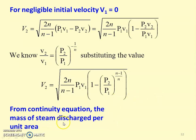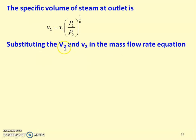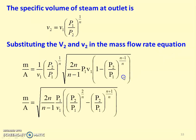From the continuity equation, the mass of steam discharged per unit area is M/A equals capital V2 divided by small v2, where capital V2 is the velocity and small v2 is the specific volume. The velocity is from the earlier equation, and the specific volume is calculated from the polytropic equation: v2 equals v1 times (P1/P2) to the power 1/n. Substituting capital V2 and small v2 into the mass flow equation gives: M/A equals (1/v1) times (P2/P1) to the power 1/n times the square root of 2n by (n minus 1) times P1v1 times (1 minus (P2/P1) to the power (n minus 1)/n).